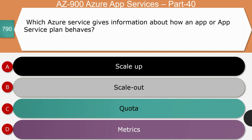Next question — which Azure service gives information about how an app or App Service Plan behaves: scale up, scale out, quota, or metrics? The right answer is metrics. Metrics in Azure give information about how an app or App Service Plan behaves — whether it's in a healthy condition or requires attention — which you can track through the metrics data collected.